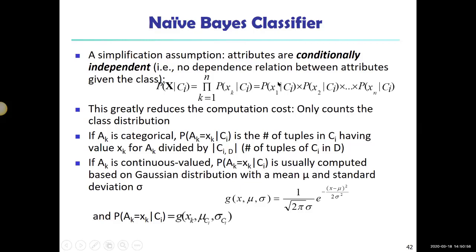To estimate each probability term: if an attribute is categorical, count how many times that attribute equals x_i within that class. But if an attribute is continuous, one approach is to assume the values are normally distributed. Within each class, we can compute the Gaussian probability using the class mean and standard deviation, which gives us the probability of attribute A taking value x given the class.